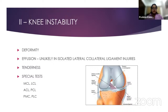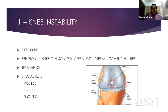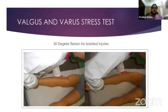Coming to knee instability, it's important to check for any deformity, as this helps in surgical planning especially for ligament reconstruction. Effusion is unlikely in an isolated MCL or LCL injury. Tenderness is important — find your own method of palpation around the knee to make sure you're not missing any important structures. There are special tests to check for MCL, LCL, ACL, PCL, or posterolateral and posteromedial corner injury. For the valgus and varus stress test for the MCL and LCL respectively, it's important to do this in 30 degrees of flexion to pick up isolated injuries.